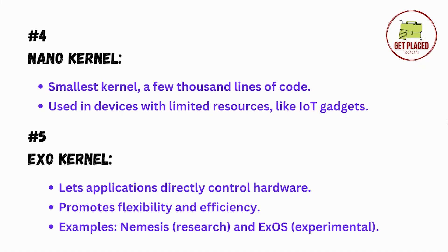Moving ahead, we have the fifth type — exo kernel. Exo kernels are different because they let computer programs directly access the machine's hardware. Even though the hardware access needs to be handled carefully, they allow for building systems that fit perfectly for specific needs. Exo kernels are still in the development process. They promote flexibility and efficiency. Examples are Exos and Nemesis.